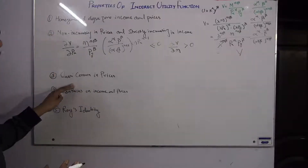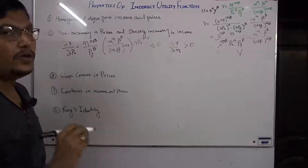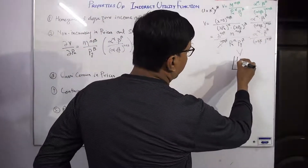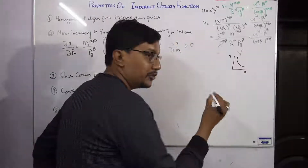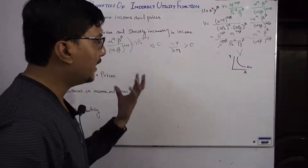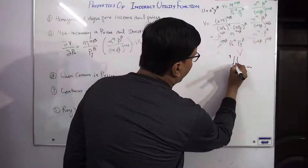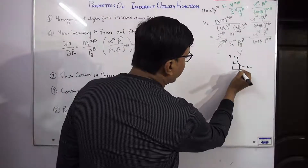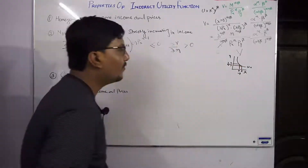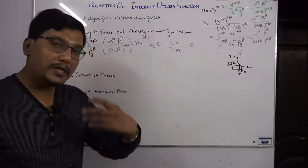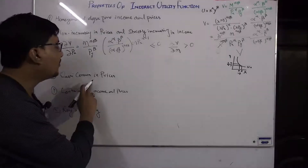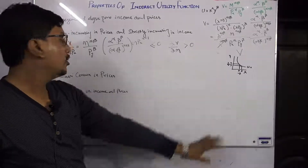The third property is that the indirect utility function is quasi-convex in prices. When we discuss the direct utility function we draw indifference curves that are convex in X and Y consumption space — increasing X requires reducing Y to keep utility constant. So the direct utility function is quasi-convex in consumption of goods.